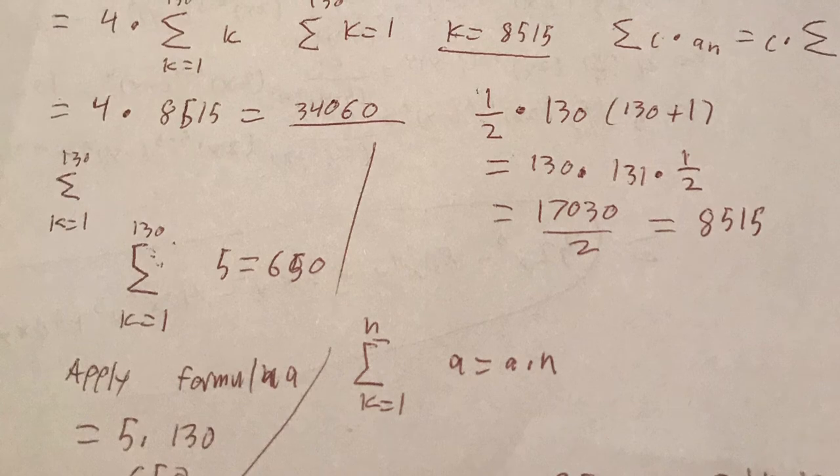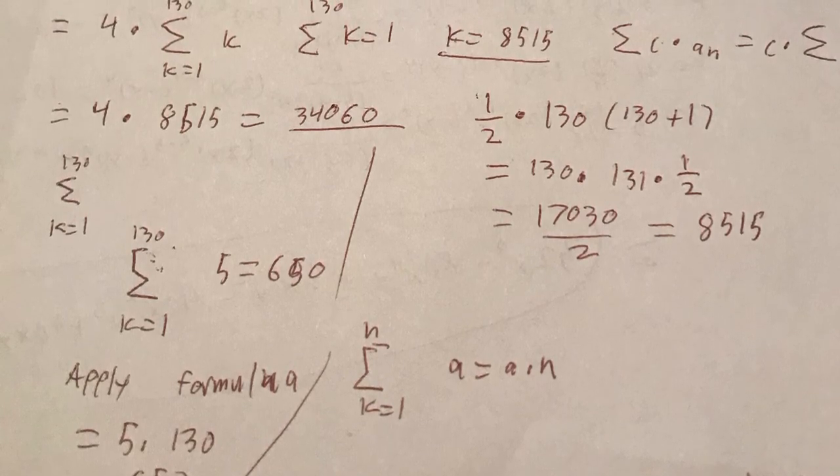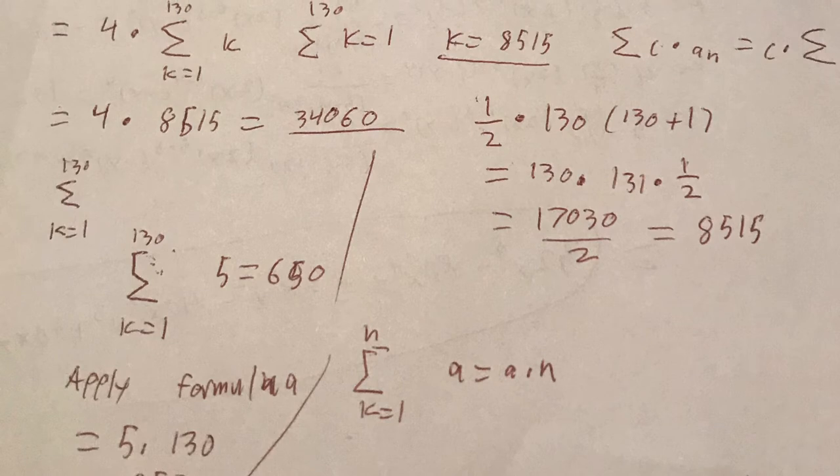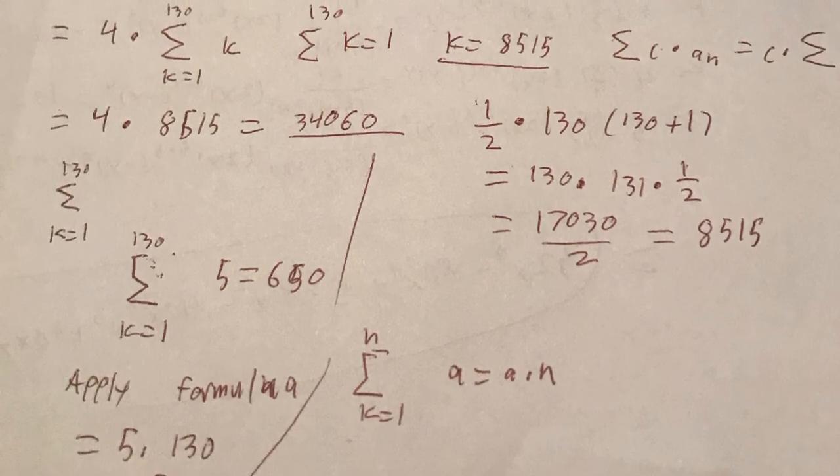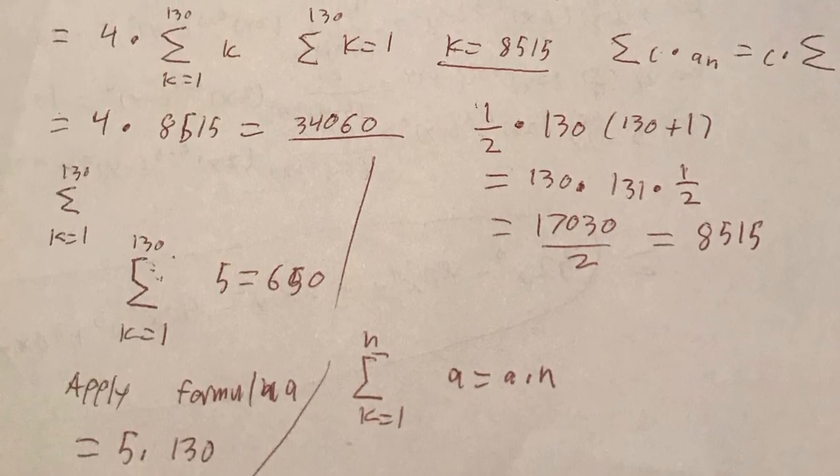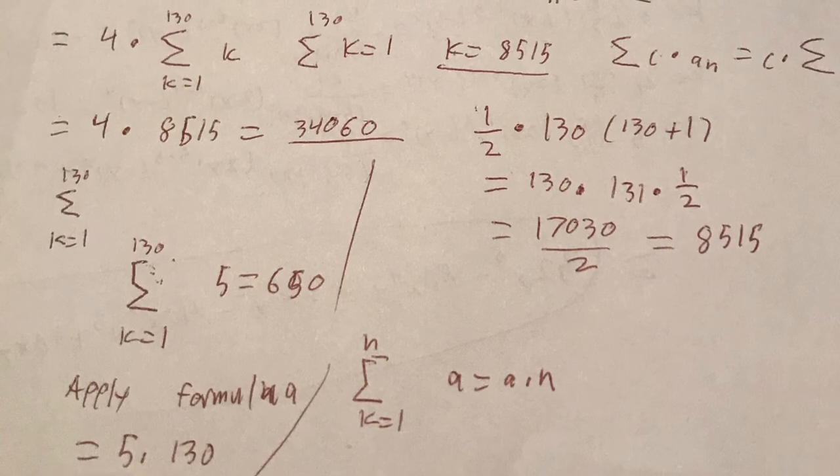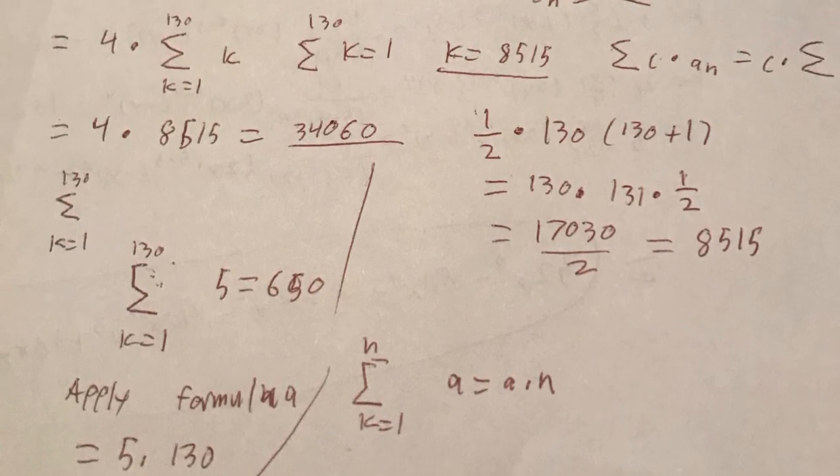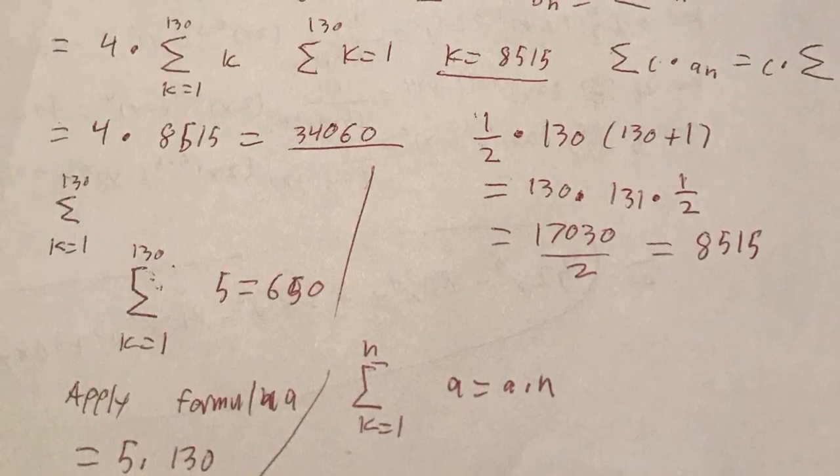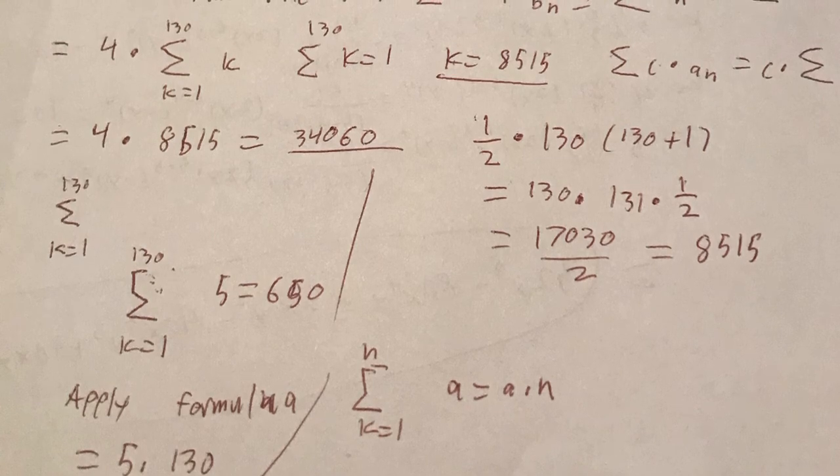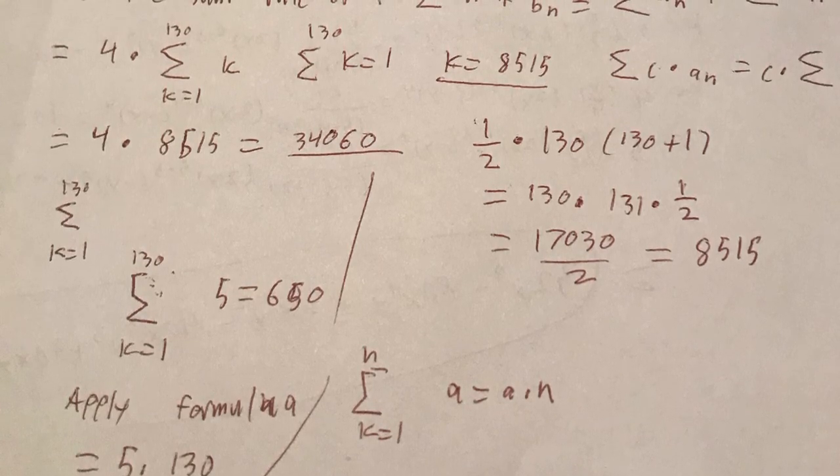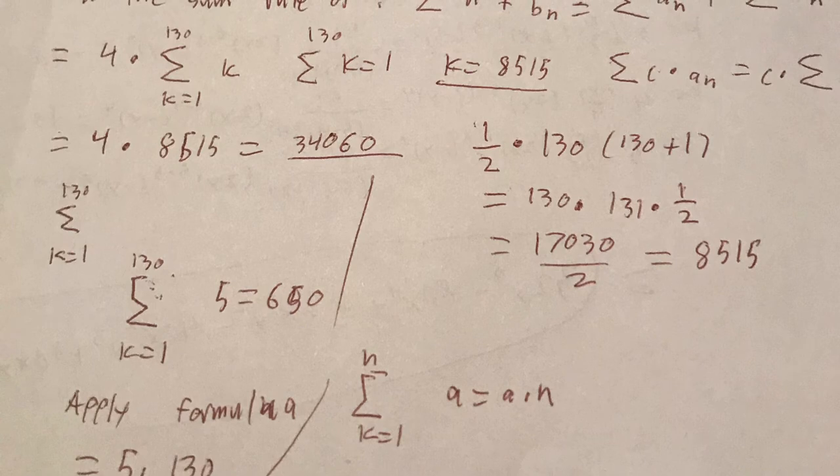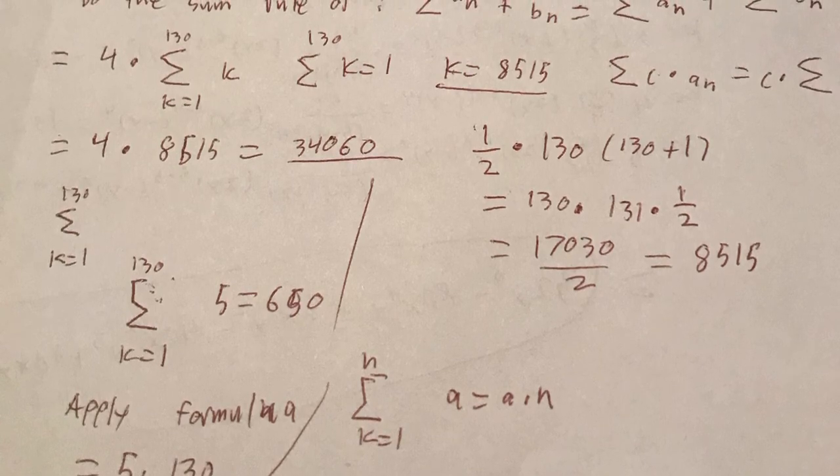And we go back to our original rule of the beginning where we had 4 times the sum from k equals 1 to 130 of k. And then we take our previous answer which was 8,515 and we times it by 4 which is a grand total of 34,060.